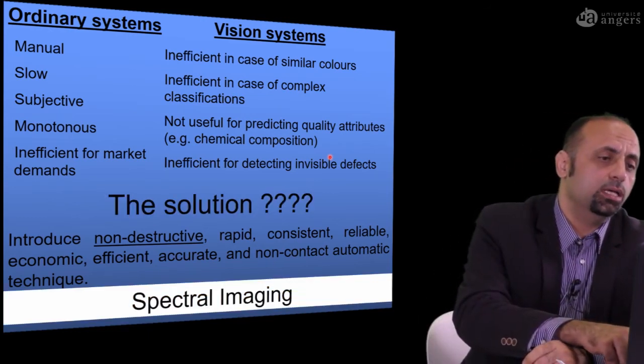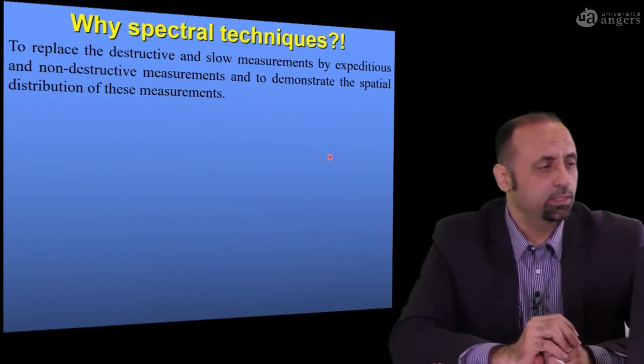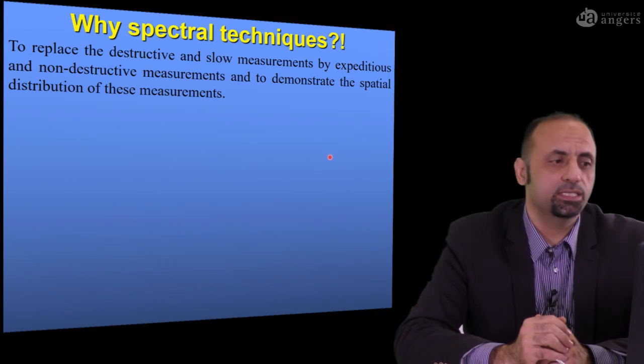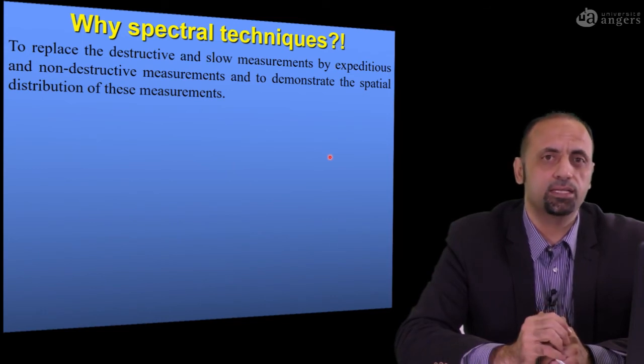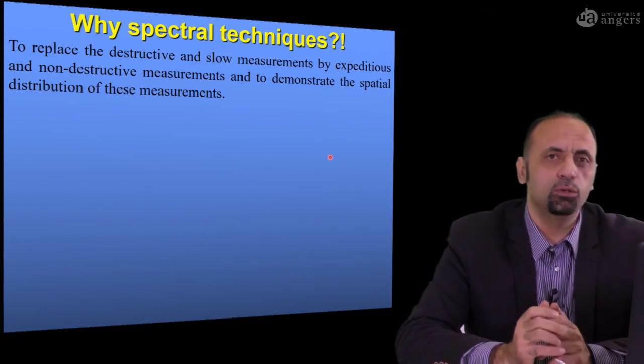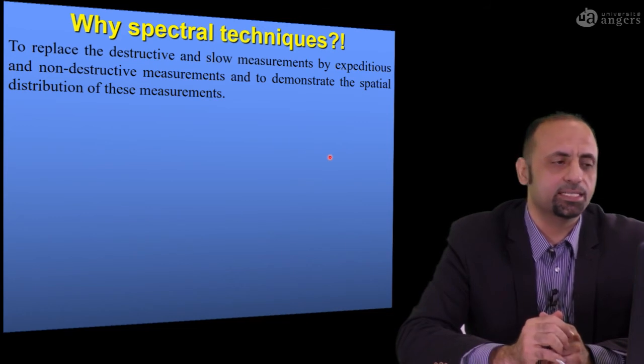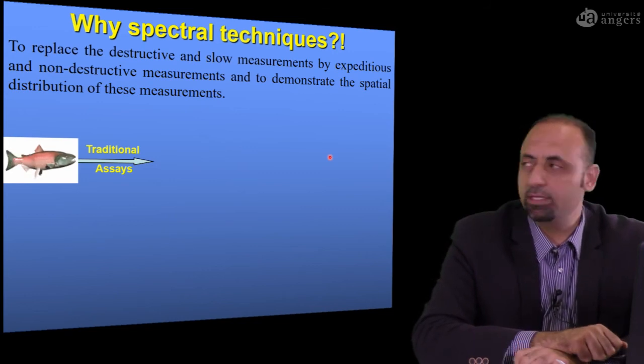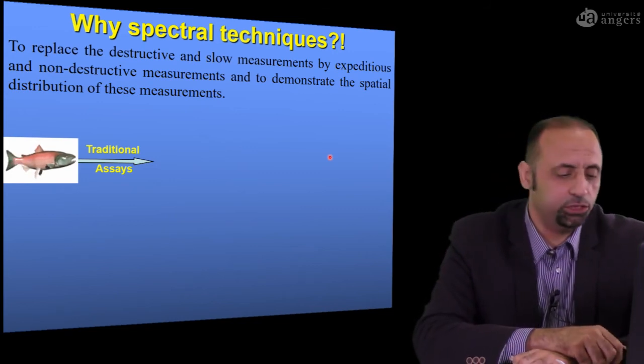So what is spectral imaging? Why we choose this one? Because it is a non-destructive technique, very fast, and can give you a lot of measurements simultaneously at the same time. So imagine for traditional method, if you have this piece of very nice fish...